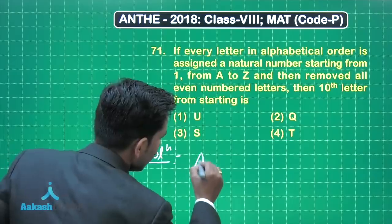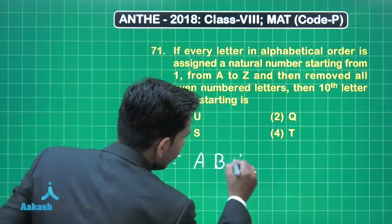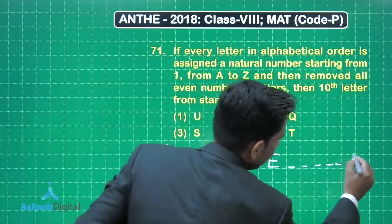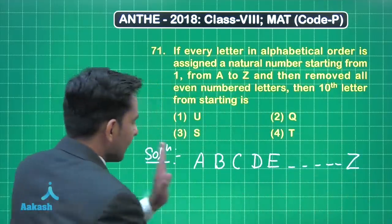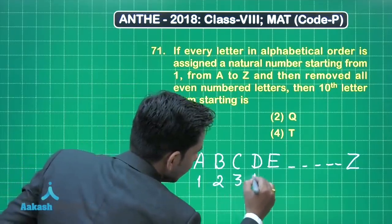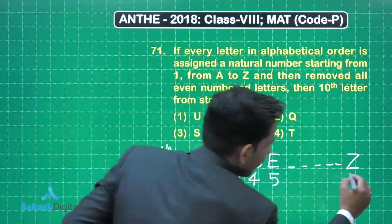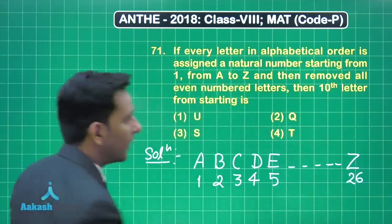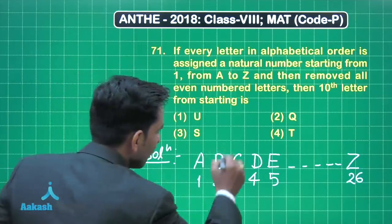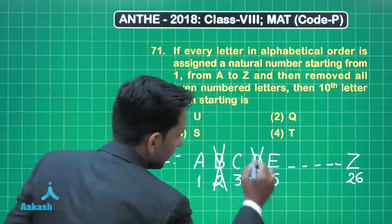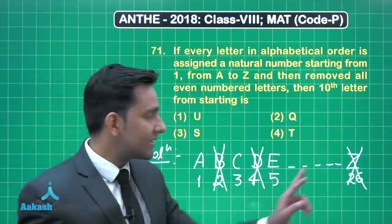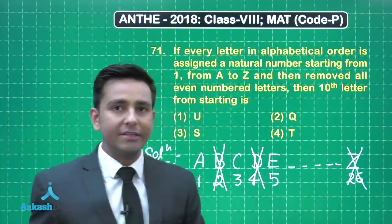First, we have the English alphabet from A to Z, arranged with the first letter assigned the first natural number, then 2, then 3, then 4, then 5 and so on up to 26. Now we have to remove the letters at even places — that means we remove B, then D, and similarly all even-placed letters, and finally Z because the position of letter Z is even number 26.